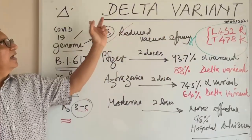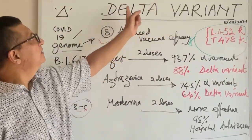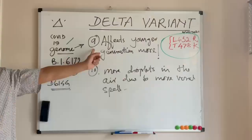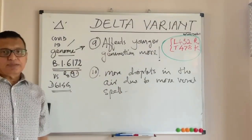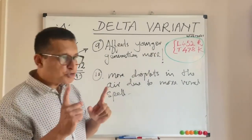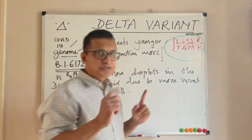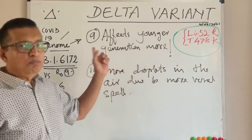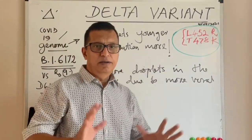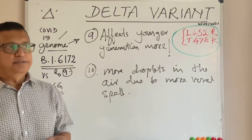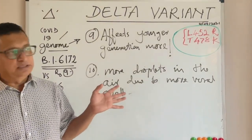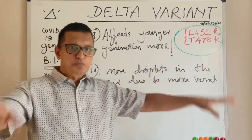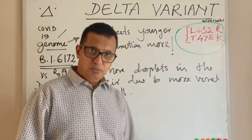The ninth factor is that the delta variant affects the younger generation more than other variants. More young people are infected, and since they are more active in society, they spread the disease before becoming symptomatic.